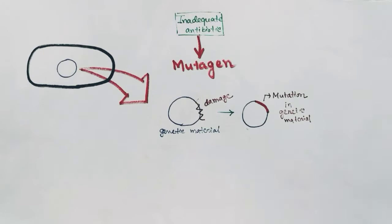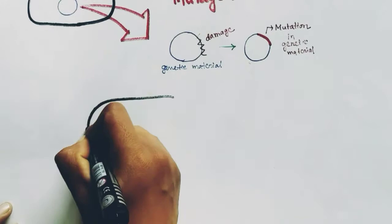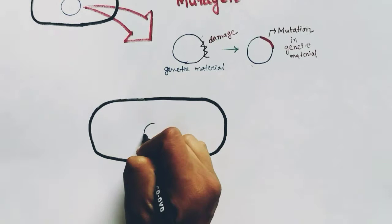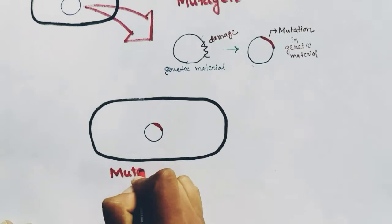This change in the genetic material can cause differences in bacterial properties, which can in future inhibit that particular antibiotic which started the mutation in that bacteria.